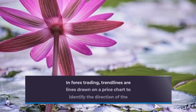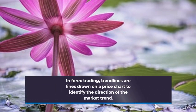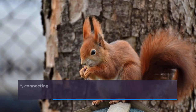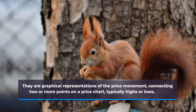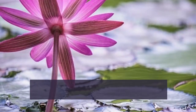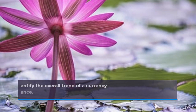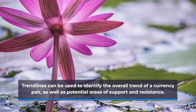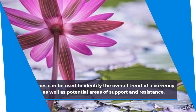In forex trading, trend lines are lines drawn on a price chart to identify the direction of the market trend. They are graphical representations of price movement, connecting two or more points on a price chart, typically highs or lows. Trend lines can be used to identify the overall trend of a currency pair, as well as potential areas of support and resistance.